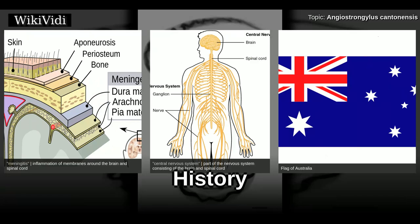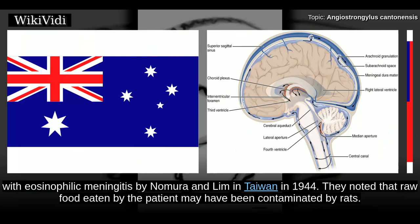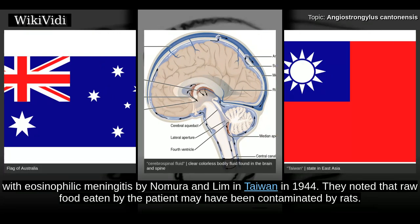History. First described by Chen in Cantonese rats, the nematode Angiostrongylus cantonensis was identified in the cerebrospinal fluid of a patient with eosinophilic meningitis by Nomor on Limb in Taiwan in 1944. They noted that raw food eaten by the patient may have been contaminated by rats.